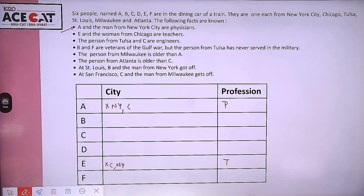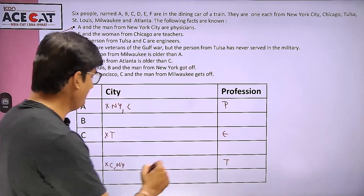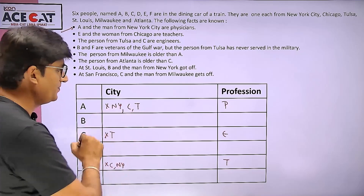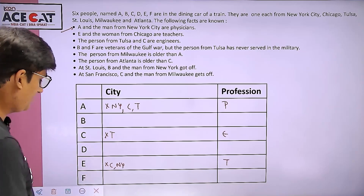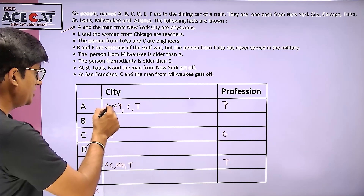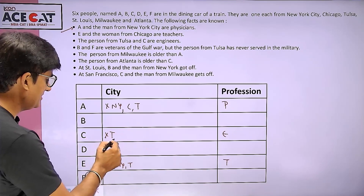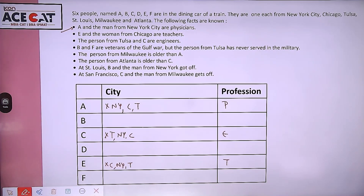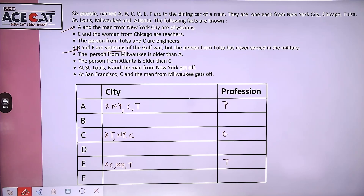Coming to the third clue: the person from Tulsa and C are engineers. This means C does not belong to Tulsa, but C is an engineer. Keeping earlier points in mind: A is a teacher, so A cannot belong to Tulsa — because the Tulsa person is an engineer. And E is a teacher, so E will also not belong to Tulsa. Similarly, the New York person is a physician and the Chicago person is a teacher, but C is an engineer — so C does not belong to New York and does not belong to Chicago either.